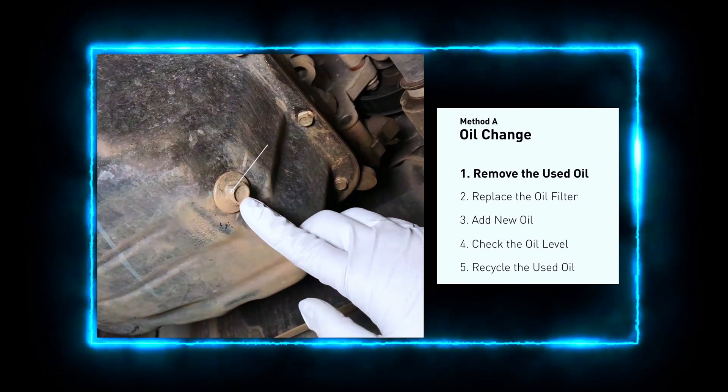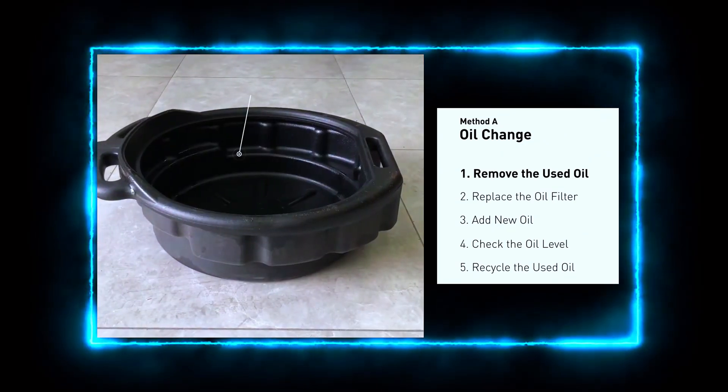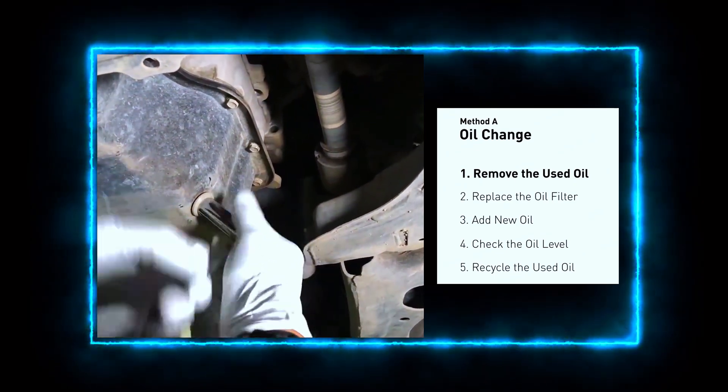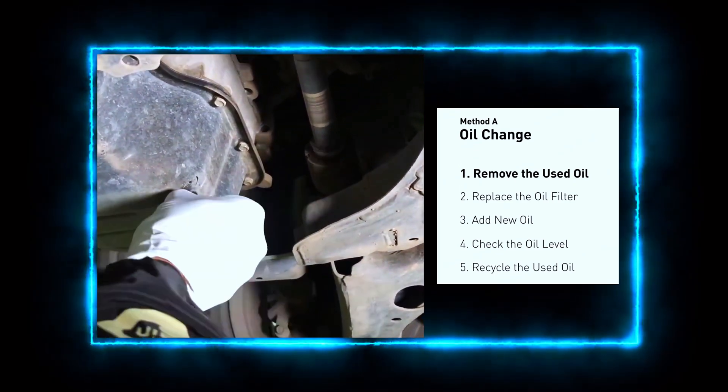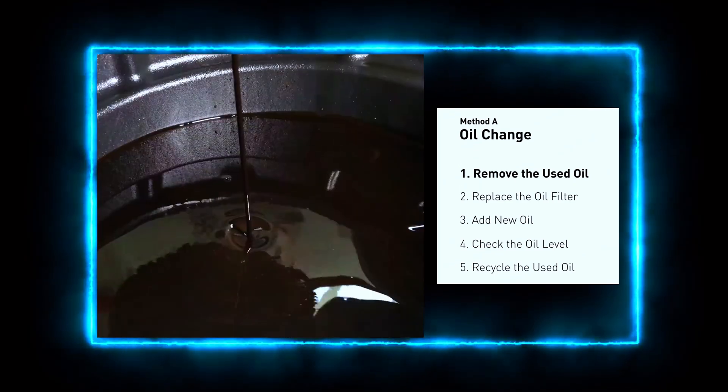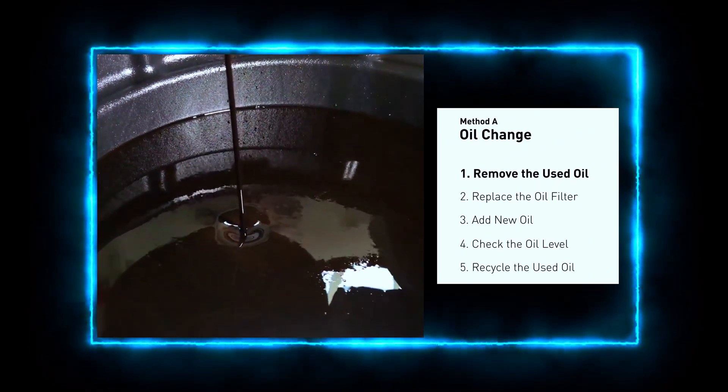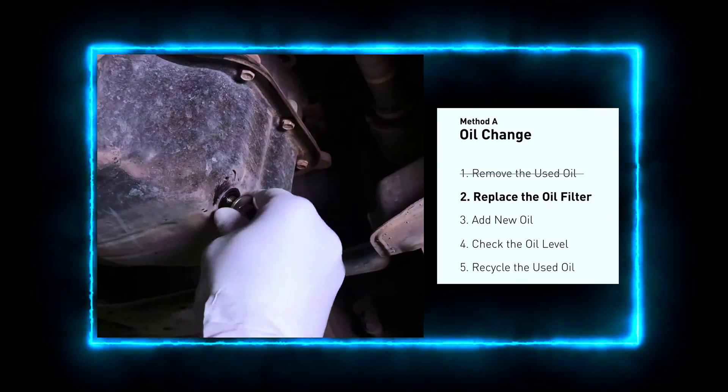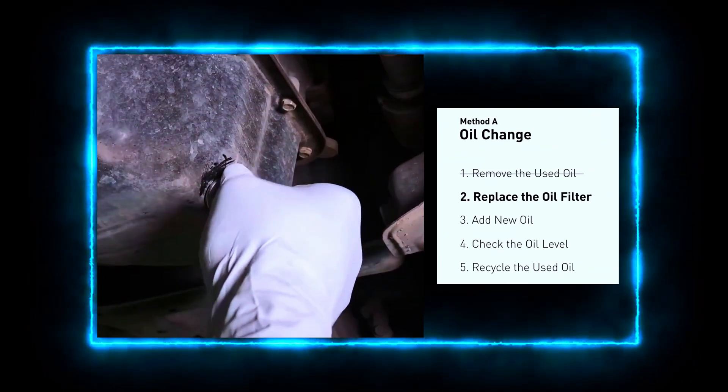Locate the oil drain plug, usually on the bottom of the engine. Use your socket set to loosen the plug, place the oil drain pan underneath to catch the old oil. Carefully remove the drain plug and let the old oil drain completely. While the oil is draining, inspect the plug and washer for any signs of wear or damage.